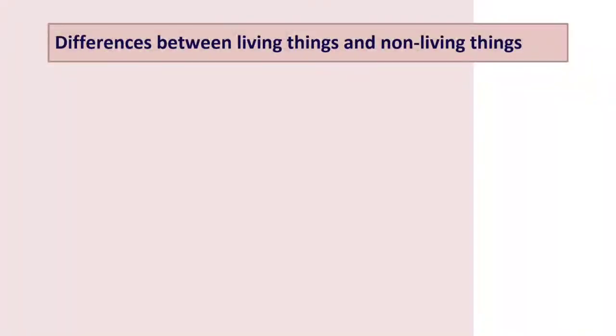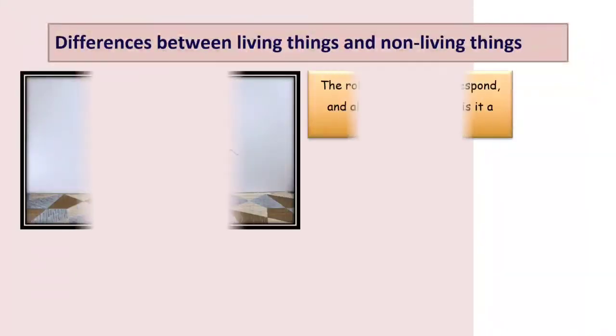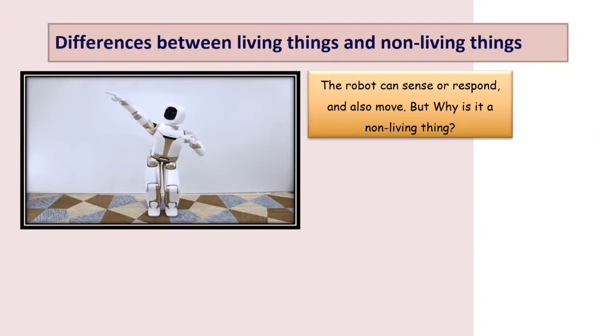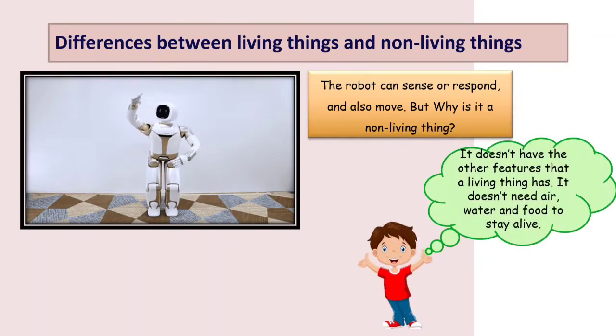Let's move on. Let's differentiate the living things and non-living things. Look at this one. I have a robot. It can move and it can respond when I give instruction. But why is it a non-living thing? Yes, even it can move or it can walk, it can do that because of the battery. The battery makes it walk or move.